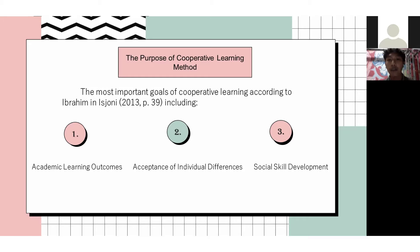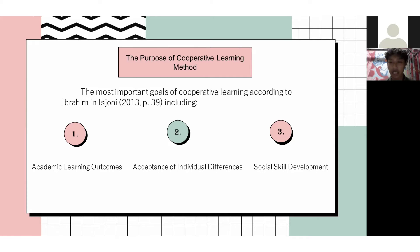The next slide we will discuss about the purpose of cooperative learning. The most important goals of cooperative learning according to Ibrahim include: the first is academic learning outcomes. Cooperative learning is superior in helping students understand difficult concepts and increases student achievement or other important academic tasks in the learning process.